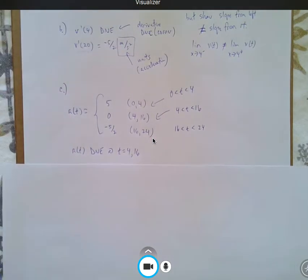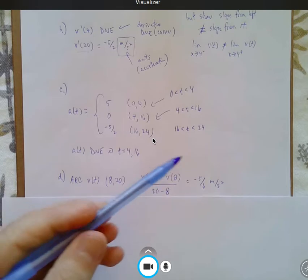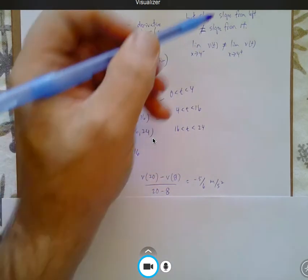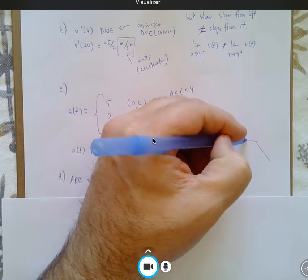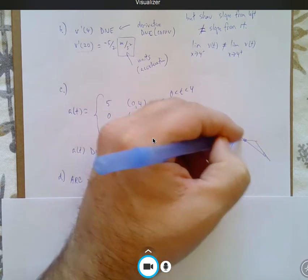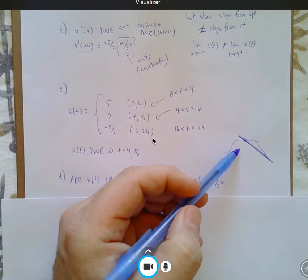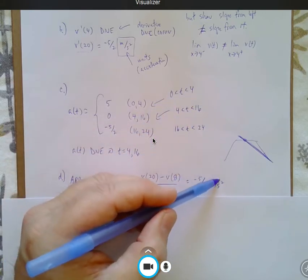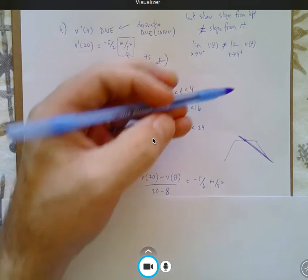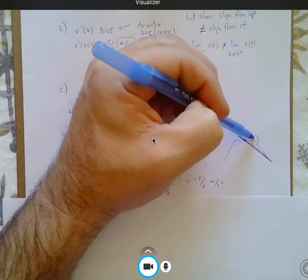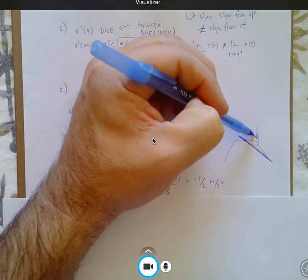Question D, the average rate of change of the velocity graph from time 8 to 20 is negative 5 sixth. Again, I'm finding the slope from, you know, again, this is a quick graph, time 8 to time 20, that slope is negative 5 sixth. Meters per second squared, remember. Okay. Can I use the mean value theorem? No, because the derivative doesn't exist at times 16.